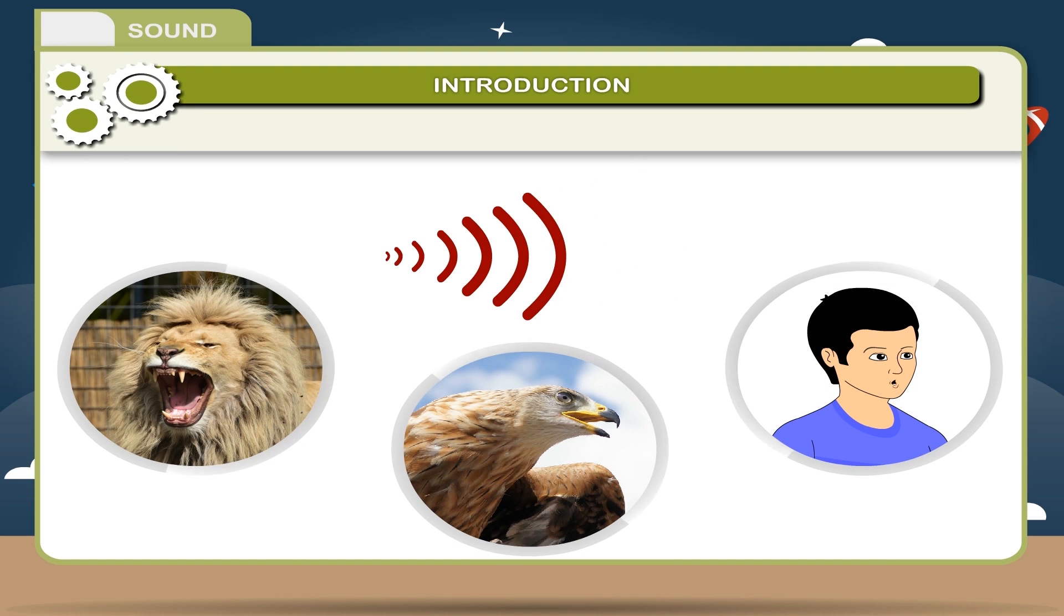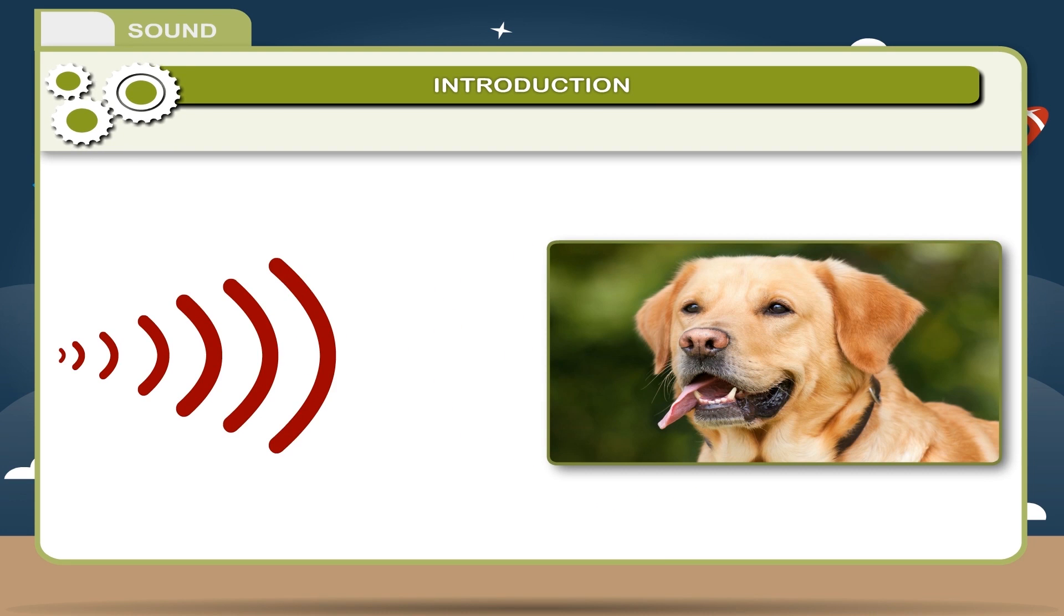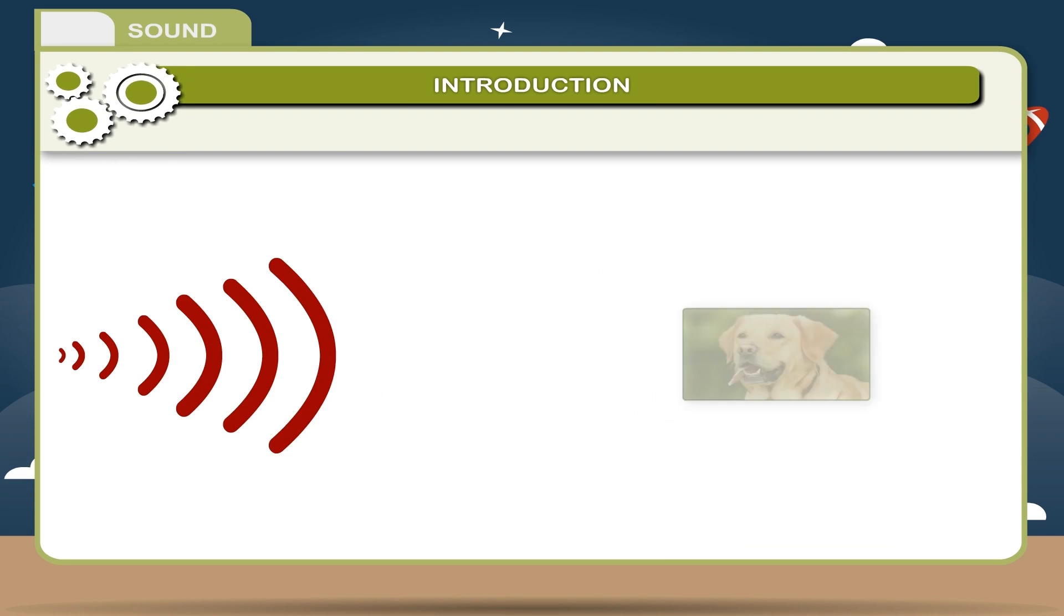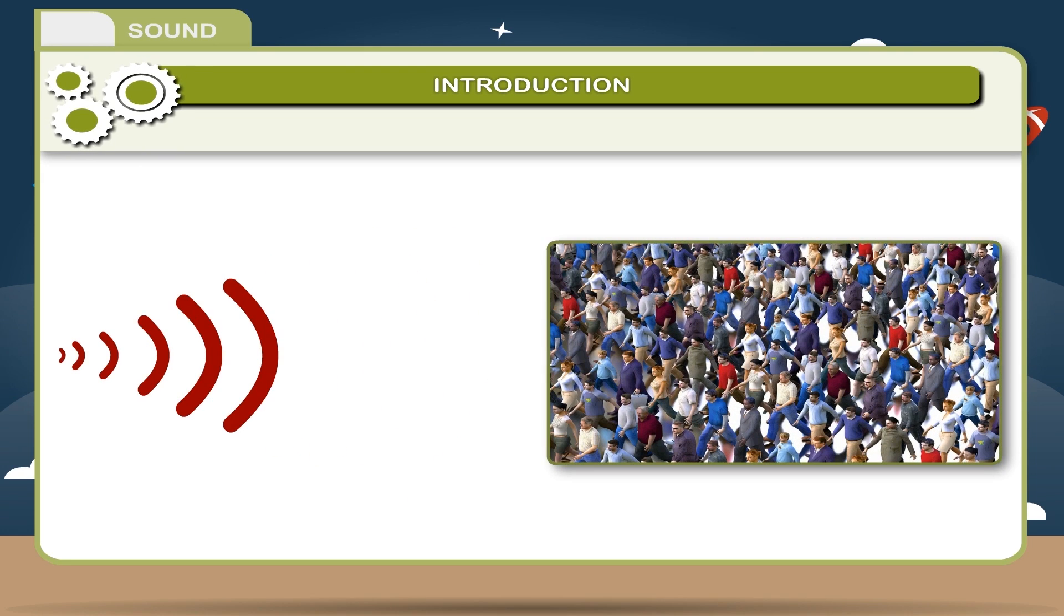All the sounds are different. Some easily recognizable sounds are the bark of a dog and the sound of the whistle of a train. Different persons have different types of sounds.